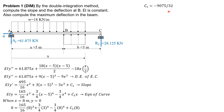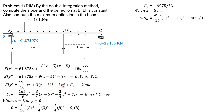Having found C sub 1, we can now compute the slope theta at B. At x equals 5: EI theta B equals 495/16 times 5 squared — this term is 0 — then minus 3 times 5 cubed, then plus C sub 1 which is negative 9075 over 32. Theta B expressed in decimal is 114.844 over EI. It's positive — that's the slope at B.